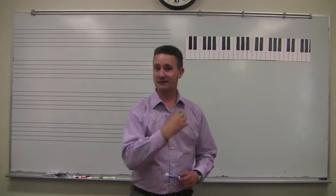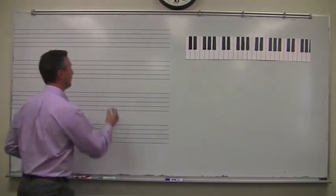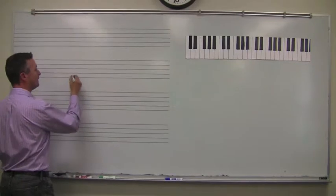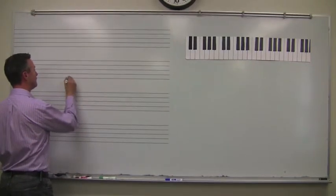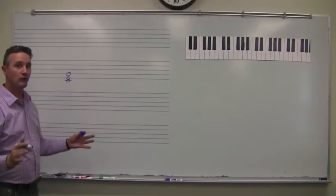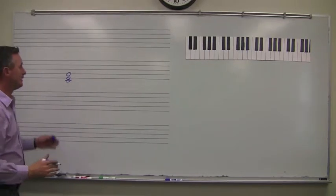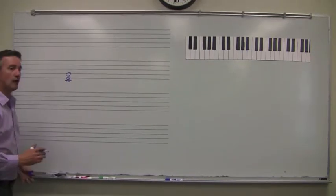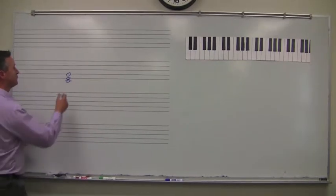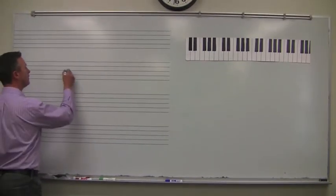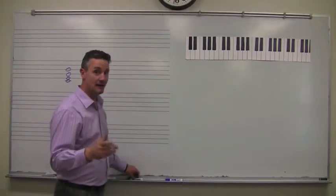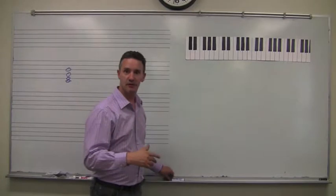That is best illustrated on the board. If I start with a triad, let's say for example C, E, and G, that is a straightforward, well-known triad. If I want to increase that triad in some way, if I want to add to it, a logical next thing to do would be to put another third on the top. And indeed, that is what happens in music theory.